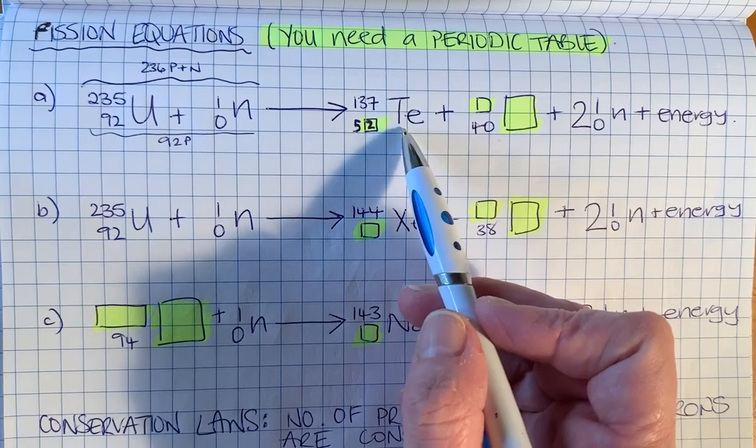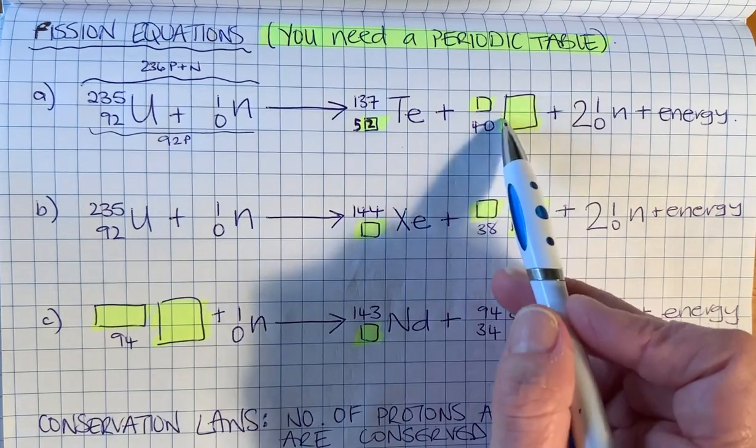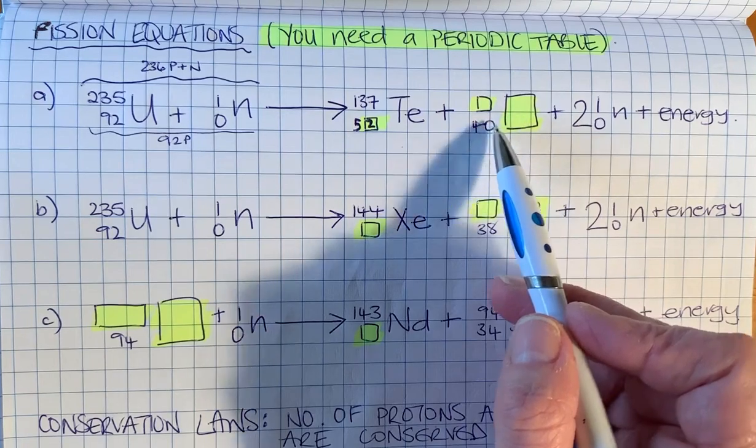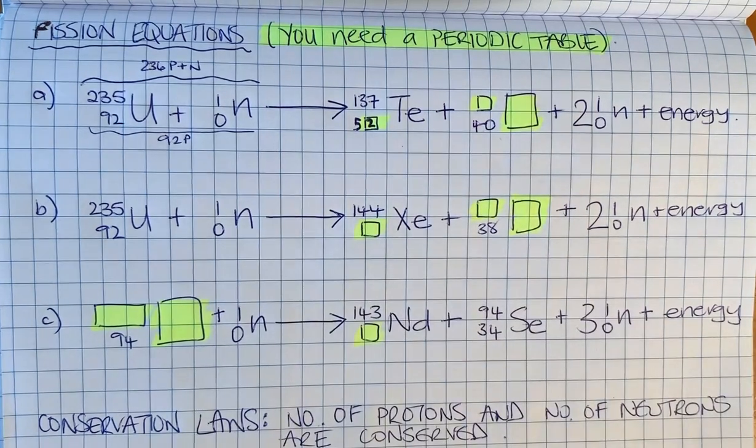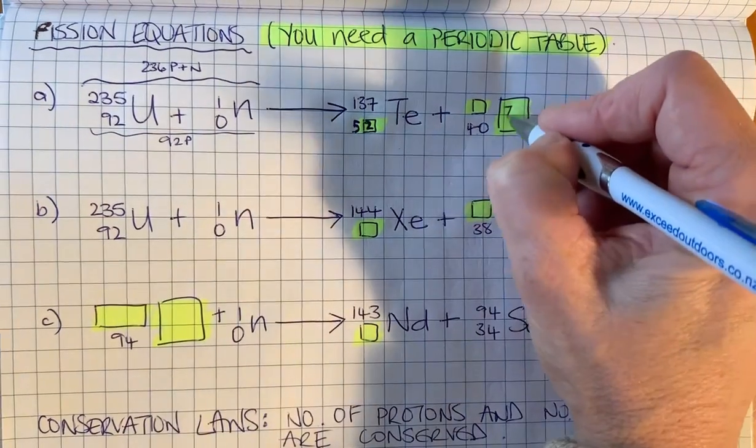The second thing we need to find is the element with atomic number 40, and that is zirconium.